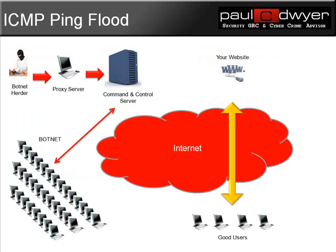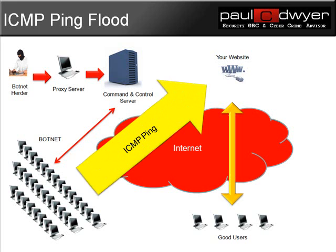Now let's look at a basic ICMP ping flood attack. Here we have the typical scenario of a website online with a connection through to its good users, and we see we have the botnet herder via the proxy server controlling the botnet via its command and control server. What they will do is issue what's known as a ping or an ICMP packet. These ICMP packets will target the website — this has been done to a great extent in cyber wars with Estonia and Georgia. There are also tools to automate this. This creates large amounts of traffic hitting the site, which the site has to send back a response to, keeping the site very busy and effectively blocking it from access to good users.